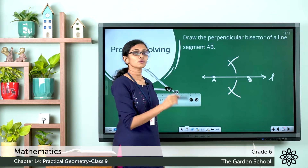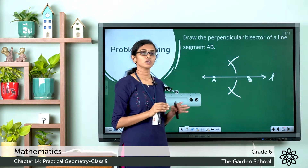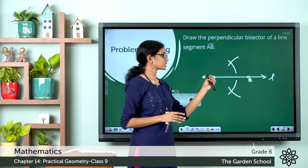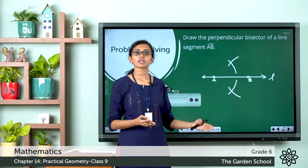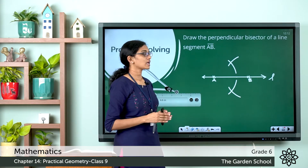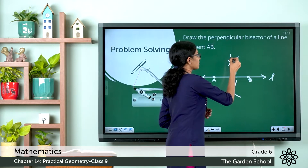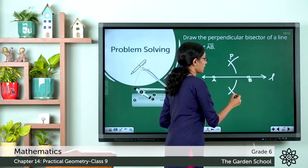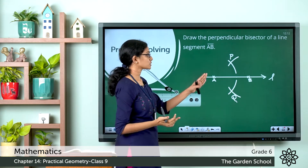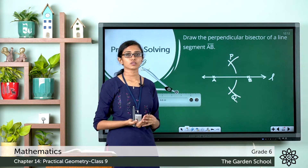Now we have drawn two arcs with B as the center. You can see the two arcs above line segment AB intersect and the two arcs below line segment AB intersect. Let us name the points of intersection as P and Q. Here we have P and here we have Q.